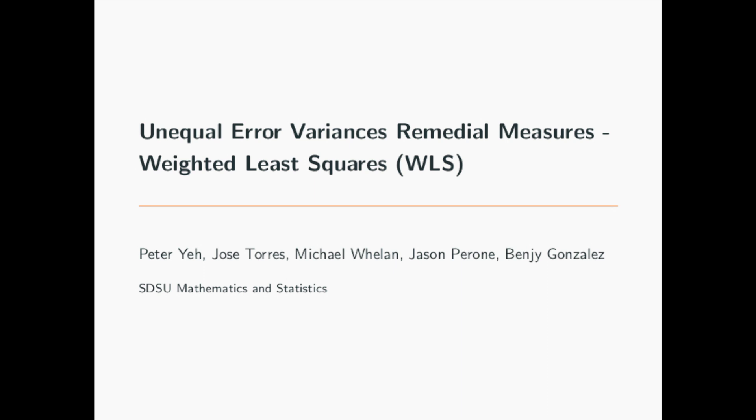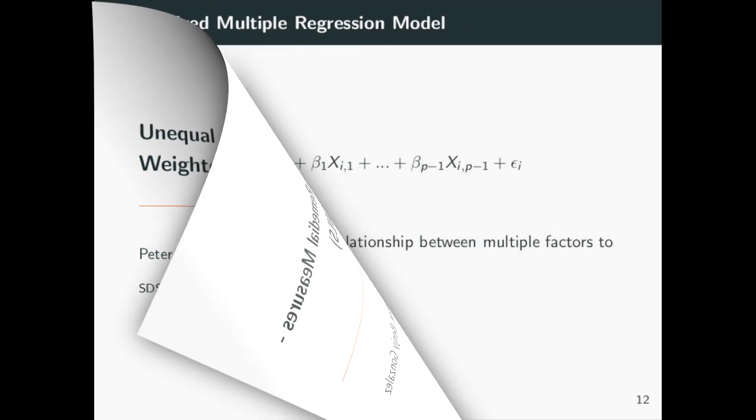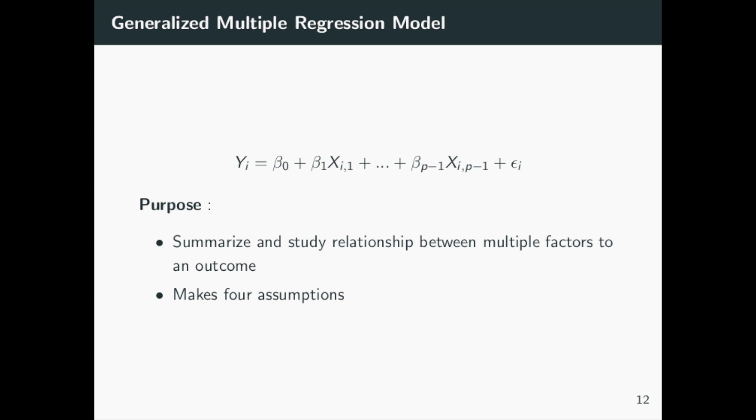To start off, let's first give a brief look over the generalized multiple regression model. The generalized multiple regression model is shown as the outcome variable being a function of its factors and error term. This model is used to summarize and study the relationship between these factors to the outcome.